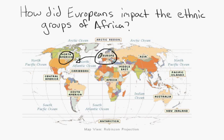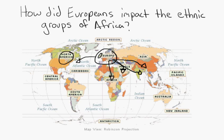Our unit is going to focus on Europe going into China, India, the Middle East, and Africa. As they go into these places, they're going to — whether politically, socially, or economically, and maybe all three — control those regions so Europe can become more powerful and more wealthy.